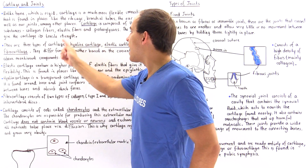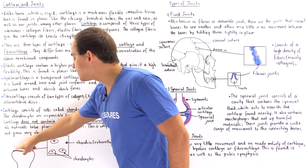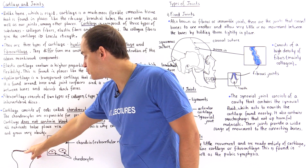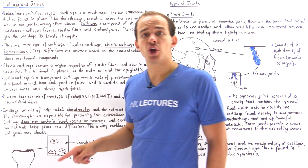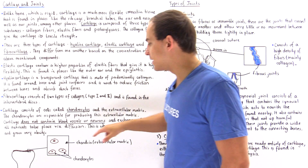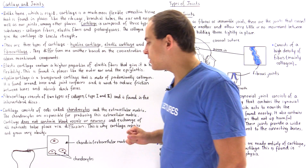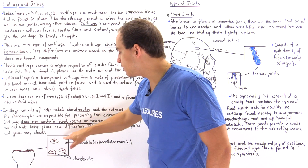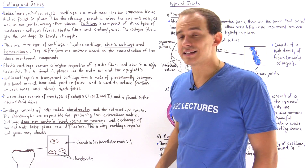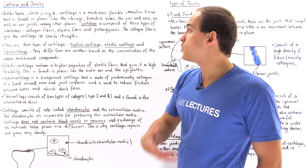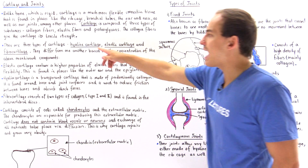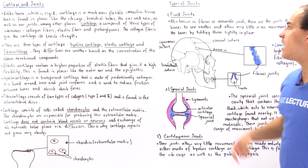If we examine hyaline cartilage found on the top portion of long bones — also known as articular cartilage because it is connected to our joints — and zoom in, we find the matrix, the chondrin, and our chondrocytes. This chondrin is composed predominantly of collagen fibers, because hyaline cartilage consists predominantly of collagen.